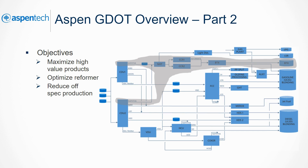The objectives of the GDOT model are to maximize the highest-value products, optimize reformer operating conditions and feed boiling range to maximize BTEX utilization and aromatics yield, and to reduce off-spec production.